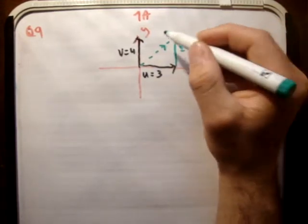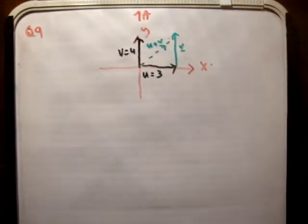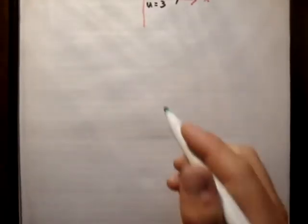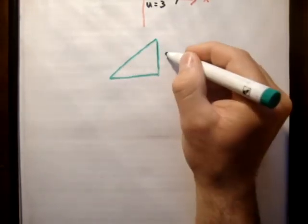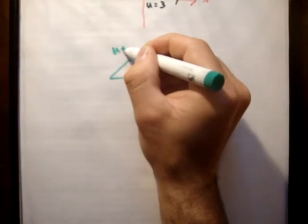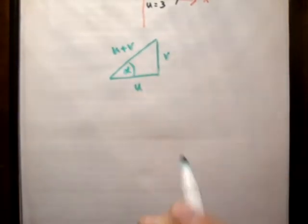So this is v and this vector is u plus v like so. So I'm just going to draw that one again. This is v, this is u, this is u plus v. The angle here is alpha.